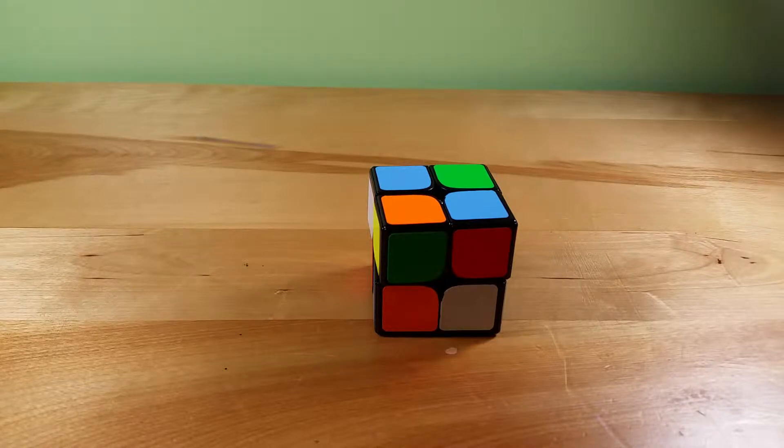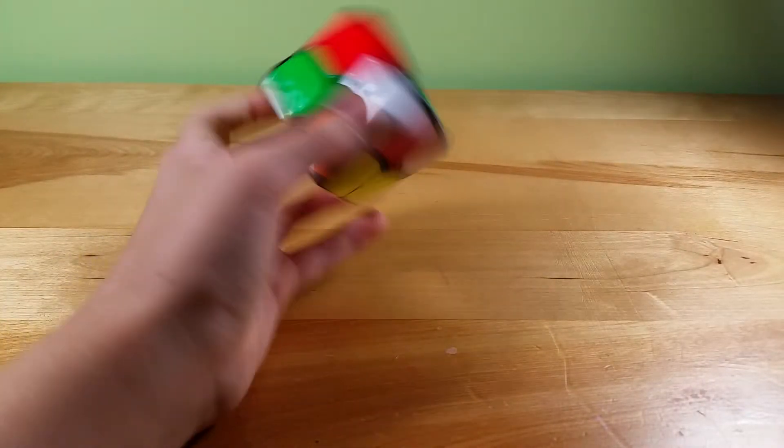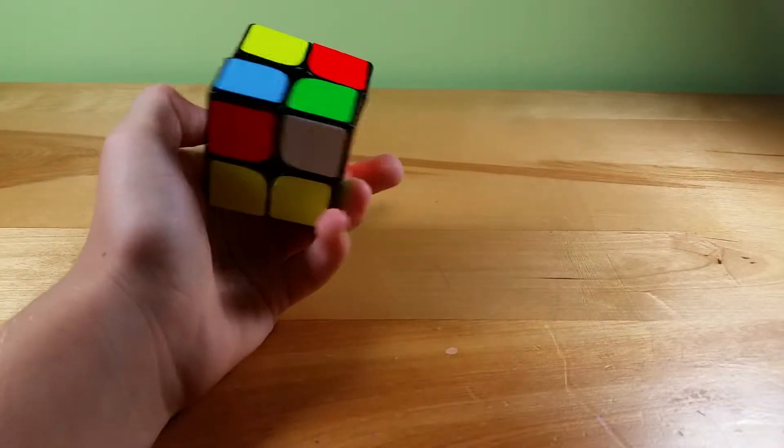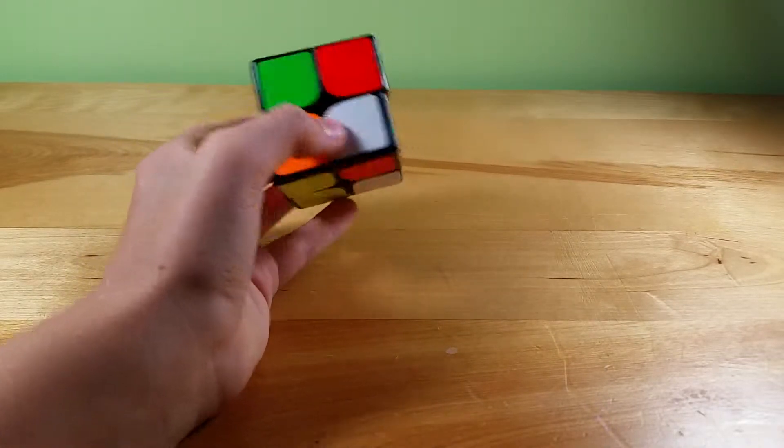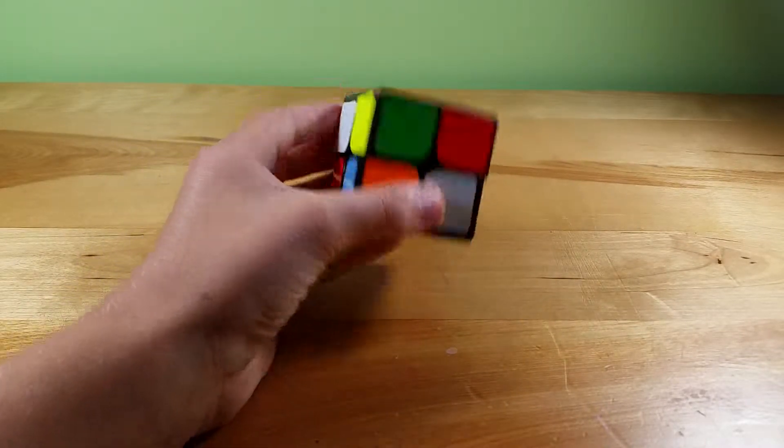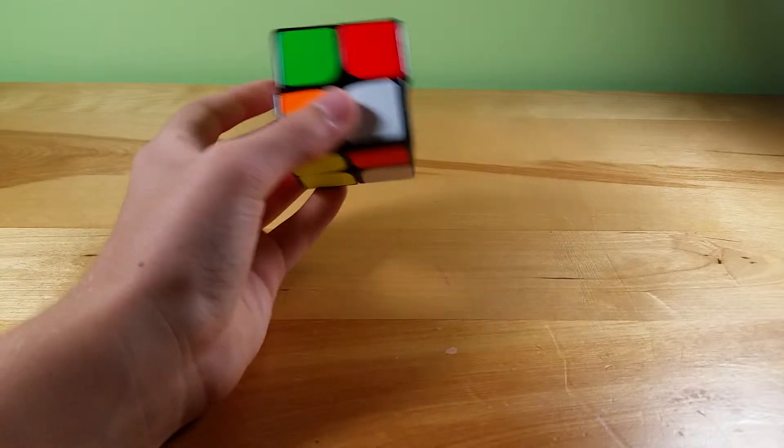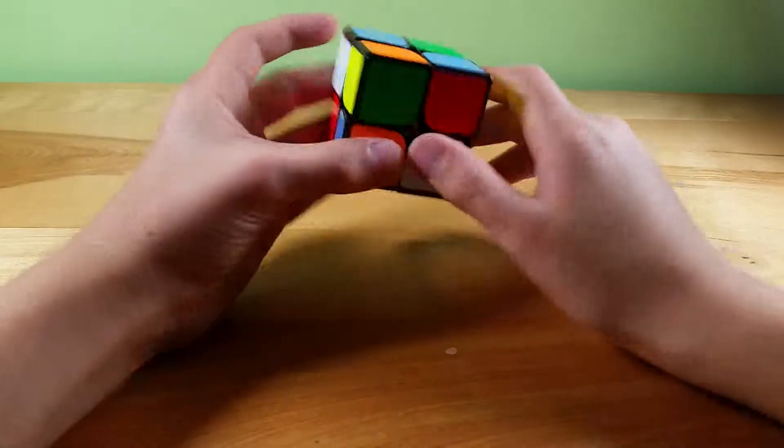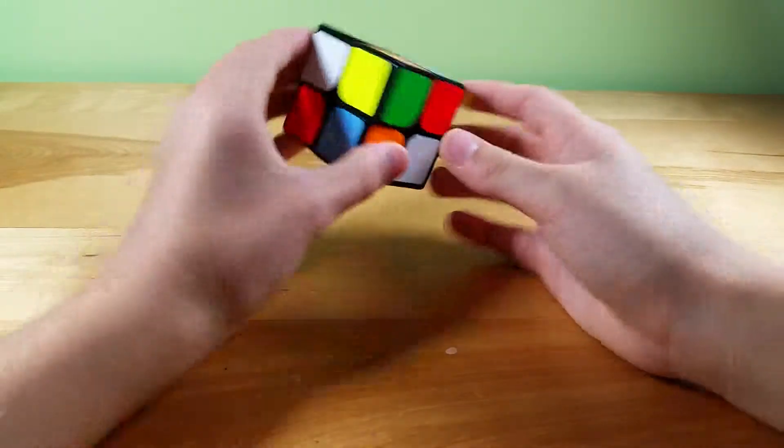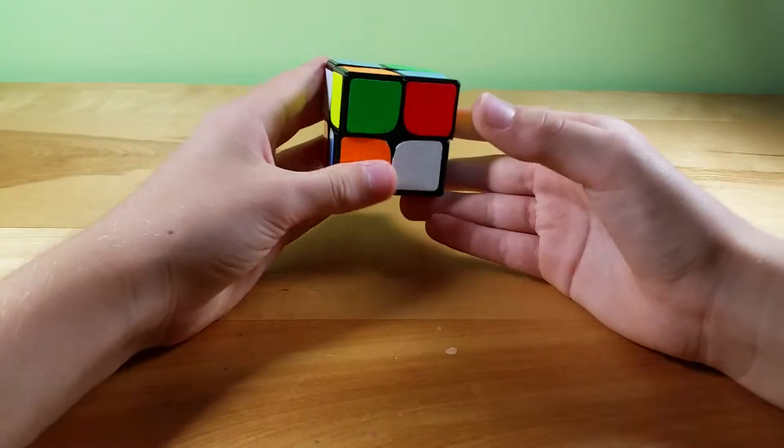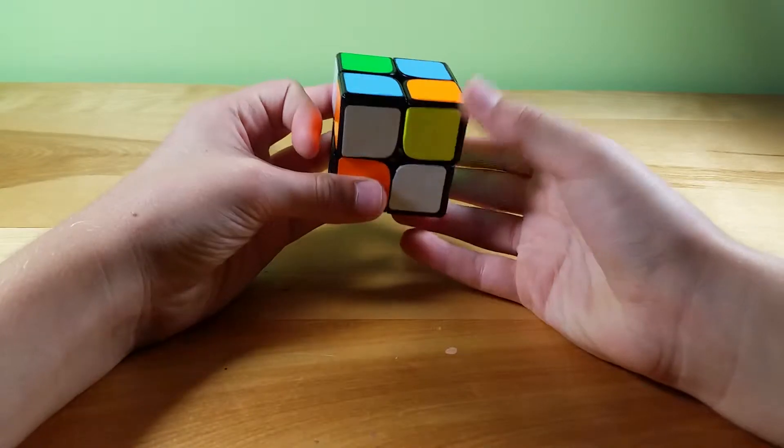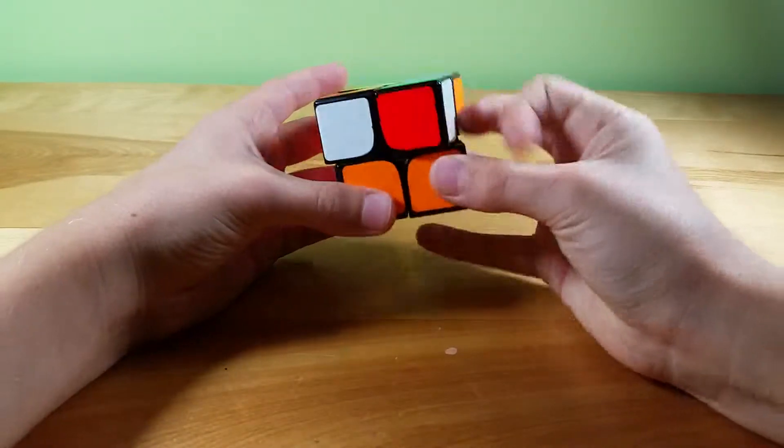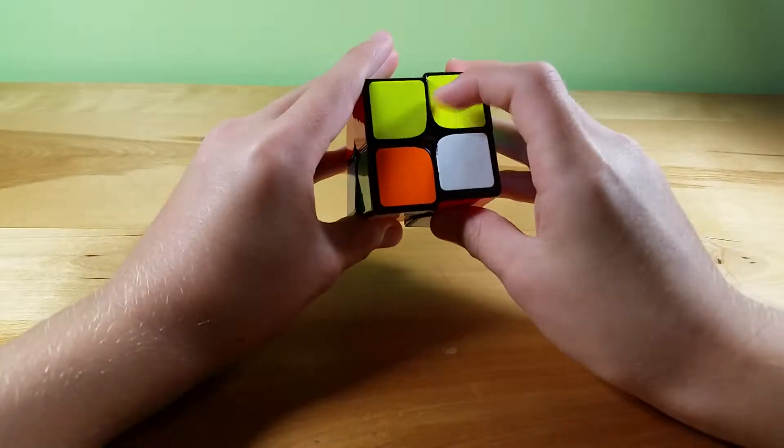Okay, so next scramble, here it is. I don't really see anything great right off the bat. I would probably do something on yellow, so I see these 2 pieces, so I'd probably do something like R' or U' R' U2 R' R' U' to match them up.